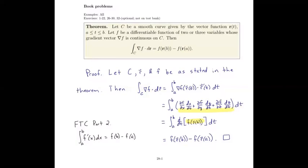Working backwards, we pack the integrand as d/dt of f(r(t)) and we're taking the integral with respect to t from a to b. We realize this is a function of a single variable t, so it's a candidate for the regular single-variable fundamental theorem of calculus. By that theorem it equals f(r(b)) minus f(r(a)), and we've got exactly the result we intended.